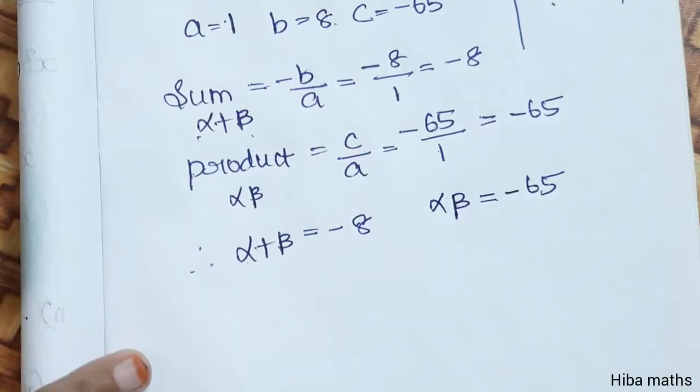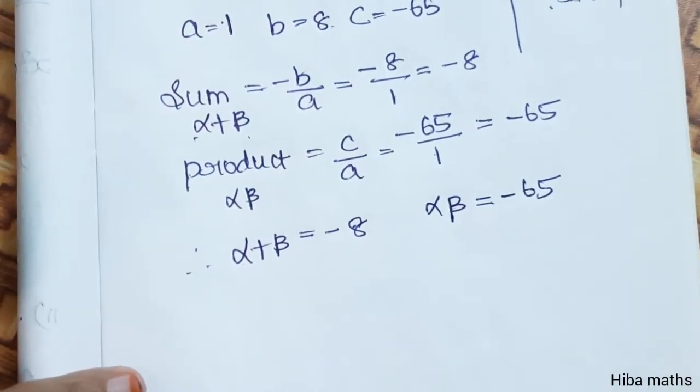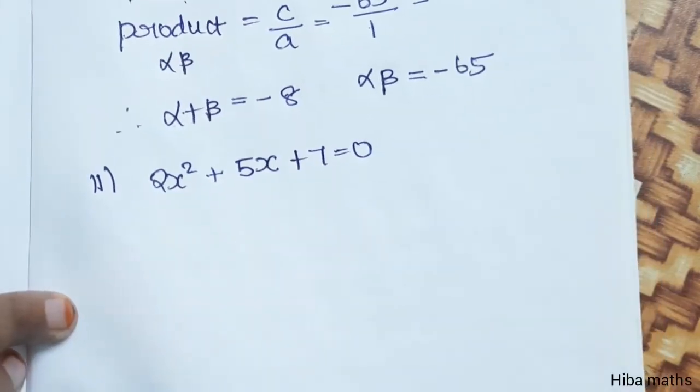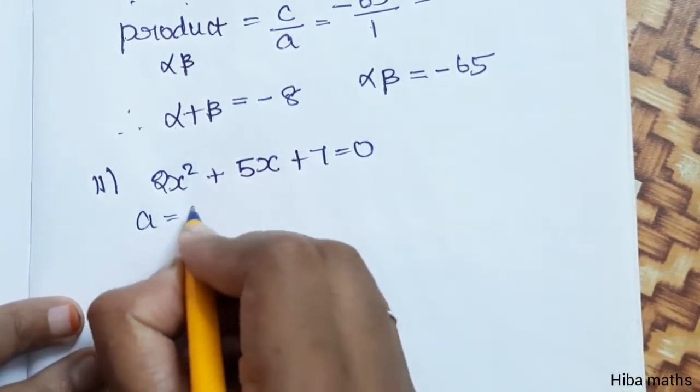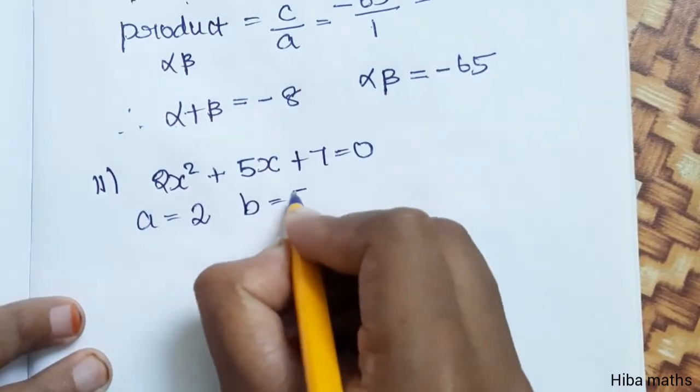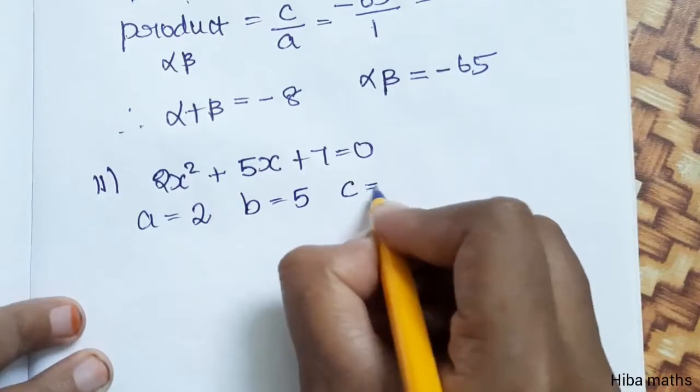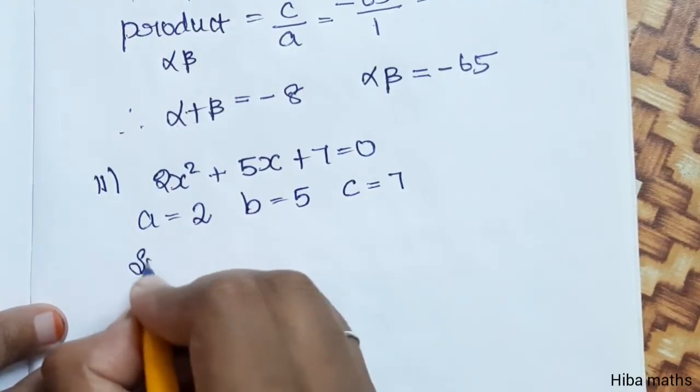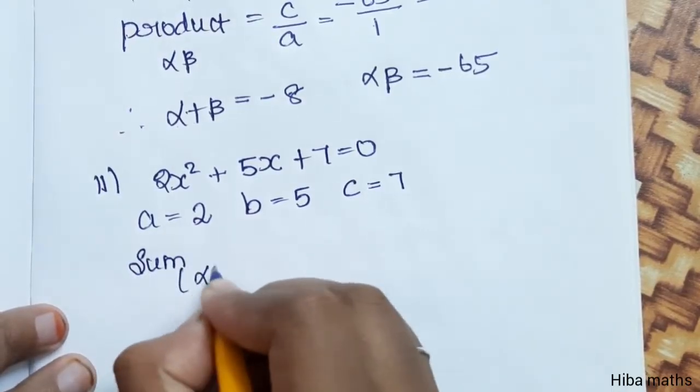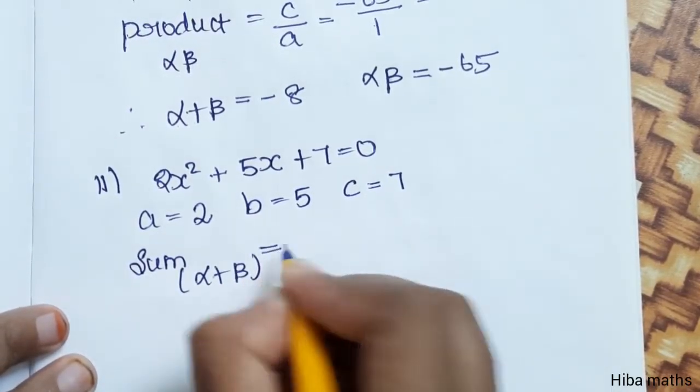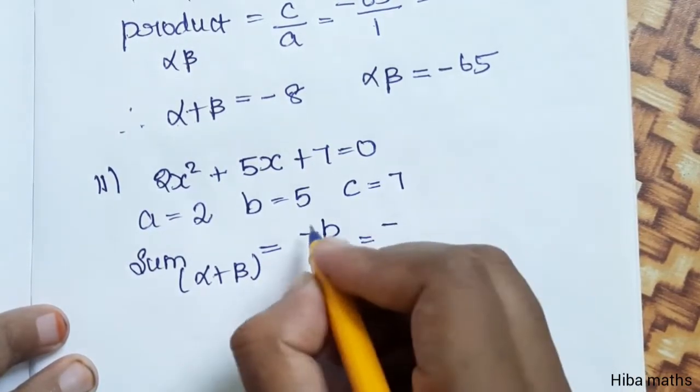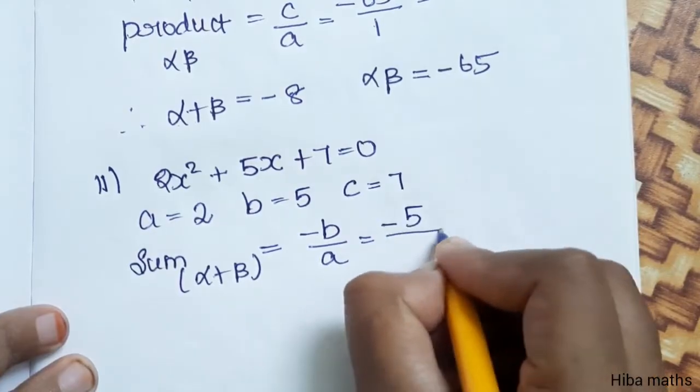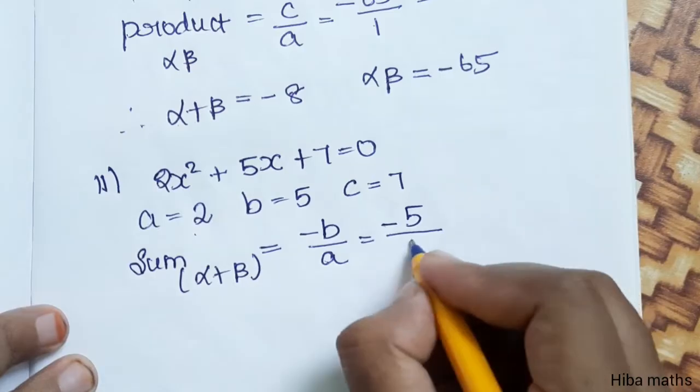Second question: 2 x square plus 5 x plus 7 is equal to 0. So a value is 2, b value is 5, c value is 7. Sum of the roots, alpha plus beta, is equal to minus b by a, that is minus 5 by 2.